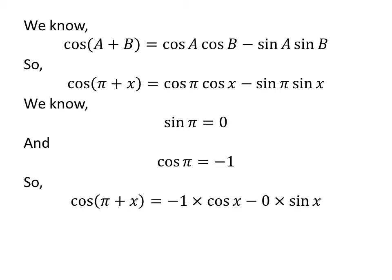Let us replace the value of sine of pi and cosine of pi in the above expression of cosine of pi plus x. So we got cosine of pi plus x is equal to minus 1 times cosine of x minus 0 times sine of x.